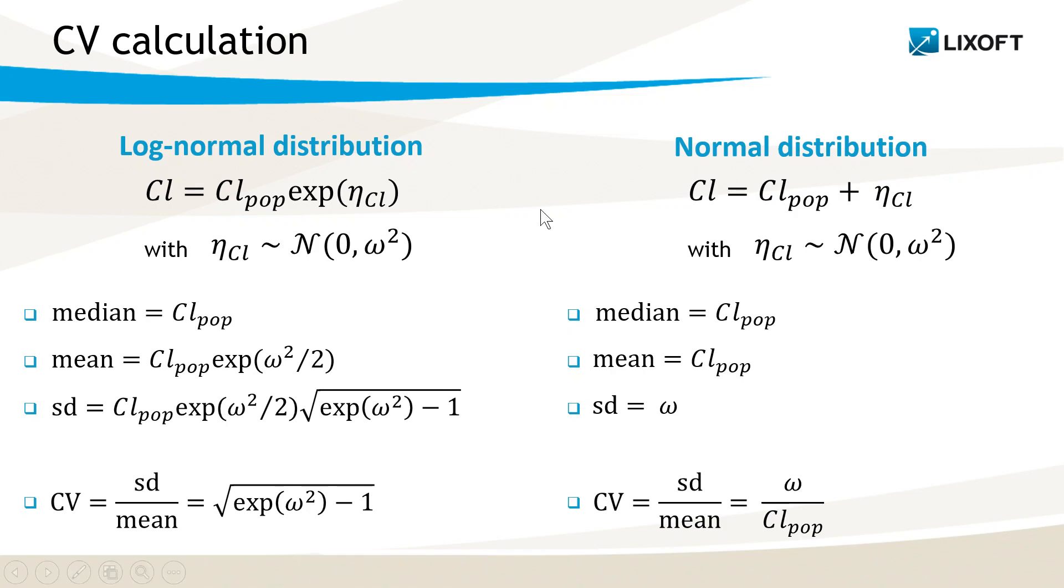If, on the opposite, I have a normal distribution with the following formula, then for the distribution of the clearance, the median is Cl pop, the mean is also Cl pop, and the standard deviation omega. In this case, the coefficient of variation is omega divided by Cl pop.